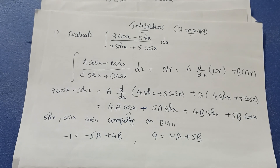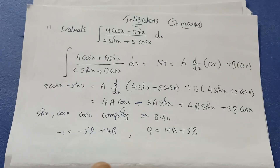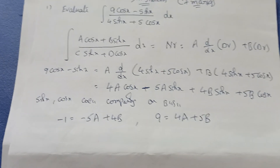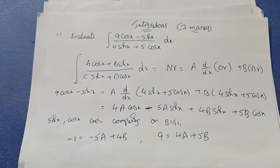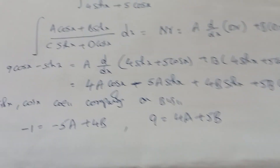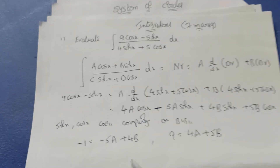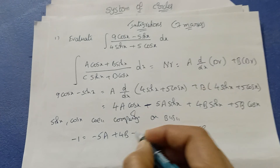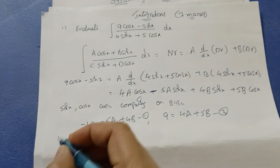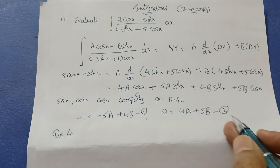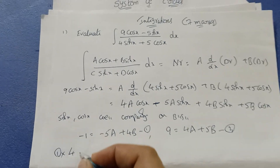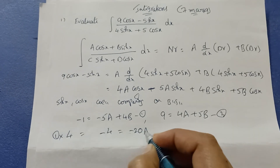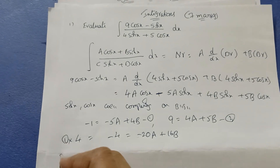Now solve for a and b values. We have minus 5a and 4a in the two equations. Use the elimination method — it is the simplest. Multiply the first equation by 4: minus 4 equals minus 20a plus 16b. Multiply the second equation by 5: 45 equals 20a plus 25b.